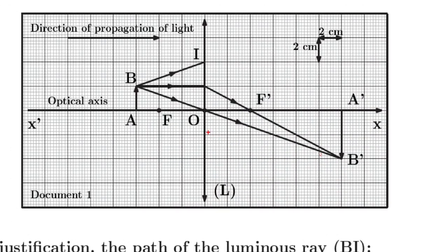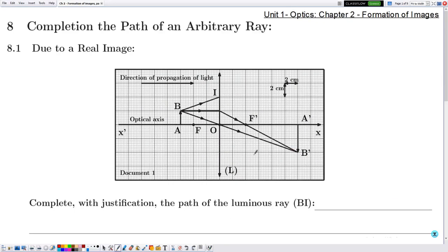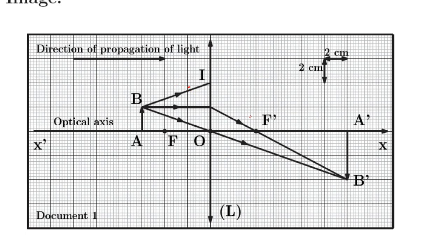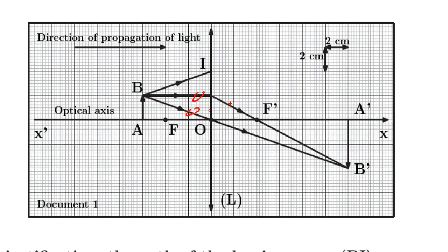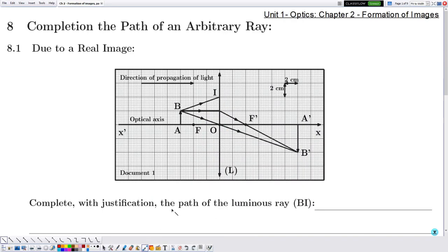In Document 1, the direction of propagation of light is from left to right and the optical axis has the same direction. The lens is perpendicular to the optical axis. We have the object AB and the image A'B'. The first ray, issued from B and parallel to the optical axis, emerges going to B'. The second ray passing through the optical center emerges without deviation going to B'. They are asking us to complete with justification the path of the luminous ray BI. BI is an arbitrary ray — arbitrary means random — so it's not parallel to the optical axis, nor passing through the optical center, nor through the object focus. In theory we don't know how to complete its path, but notice that all incident rays emerge from the lens going to B'. Therefore this ray will also emerge going to B'.